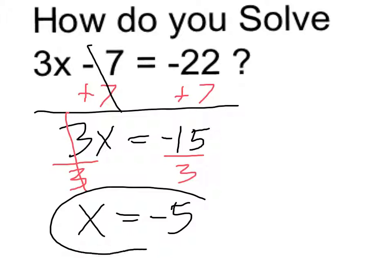So I'm proposing that the solution, the value of x which makes this true, is negative 5. Now I can do a quick check by taking negative 5, putting it into my original equation, and seeing if it is in fact true.